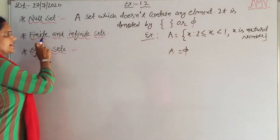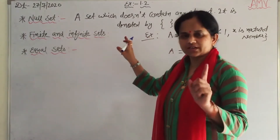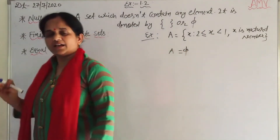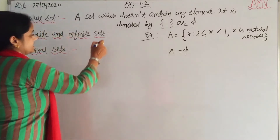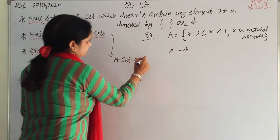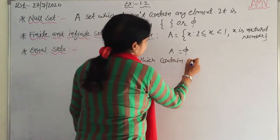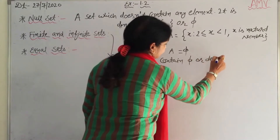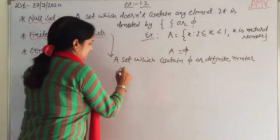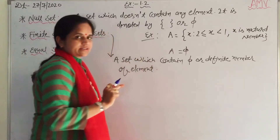Next is finite and infinite set. A set which contains a definite number of elements is known as a finite set. Otherwise it is an infinite set. A set which contains a fixed or definite number of elements is a finite set.